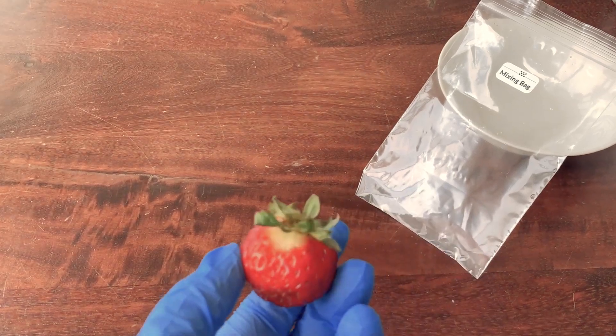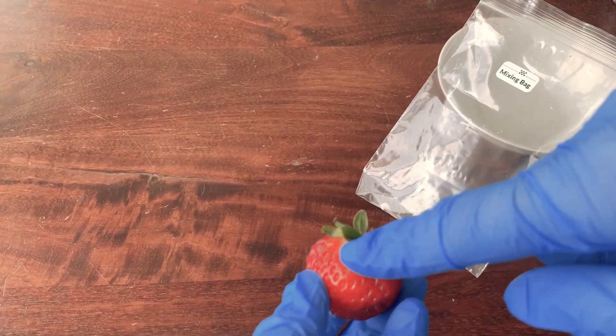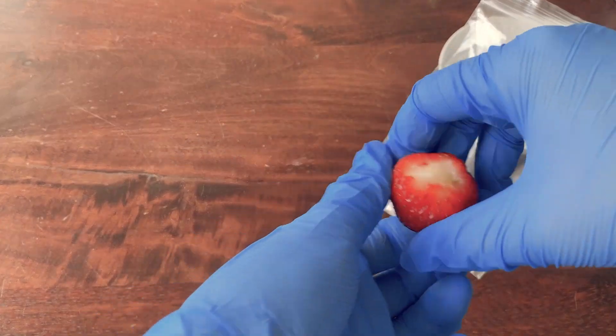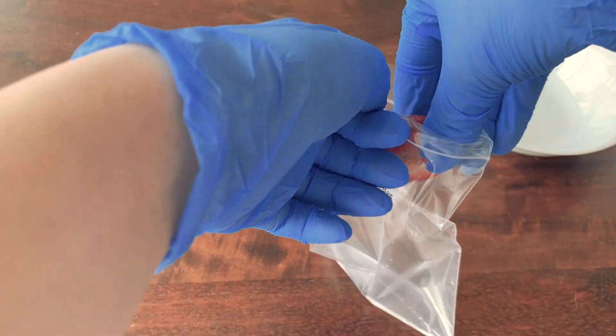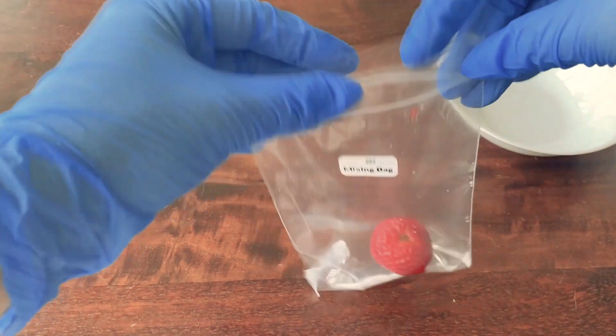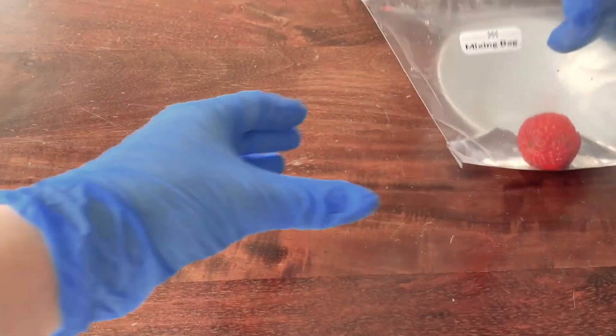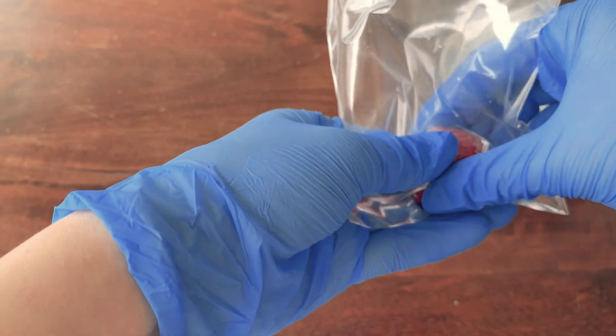Now we can add the strawberry. I will just cut the top part. You can use your scissors or a knife. So now we can put the strawberry in, close the bag, and now we can smash it.